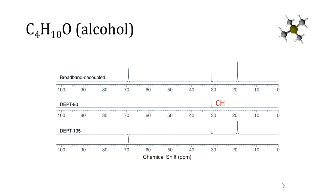This molecule has three different types of carbon atoms, but four carbon atoms in its structure. So one of these peaks must represent two chemically equivalent carbon atoms. While it's not possible to accurately integrate these peaks, we can be suspicious that the tallest peak at 19 parts per million might represent two carbon atoms. We can also identify the carbon atom with the alcohol attached — that's the peak around 69 parts per million because the oxygen atom deshields the carbon.